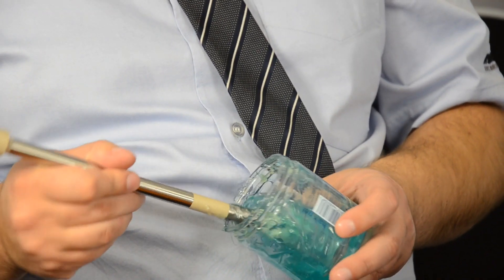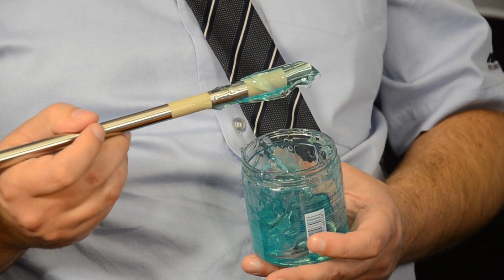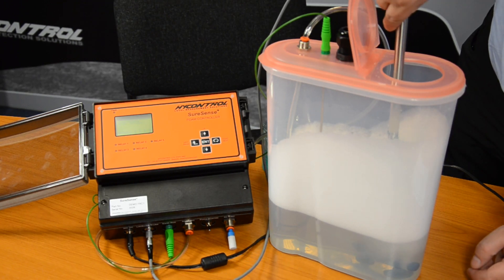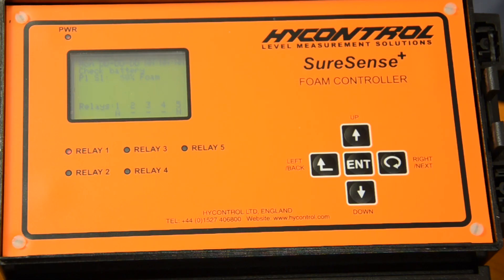Another key issue when detecting foam is fouling. Our probe is immune to fouling because it utilizes our patented IMA sensing. As you can see, our probe can handle buildup that would seriously affect the performance of another probe.